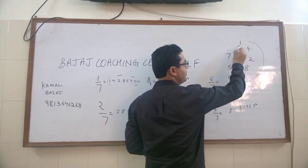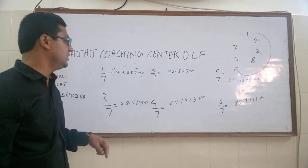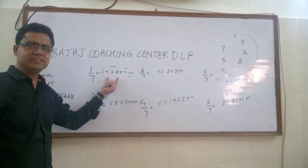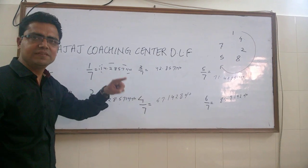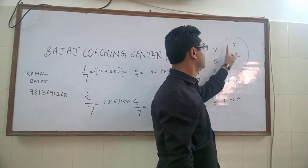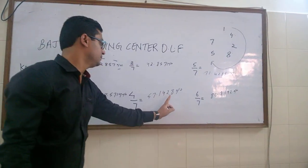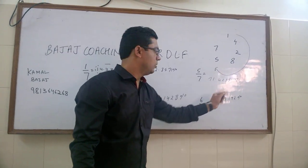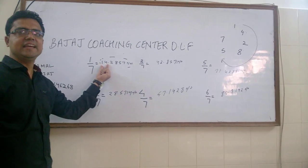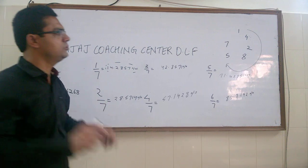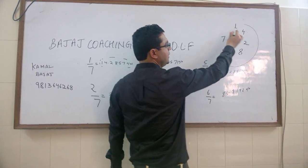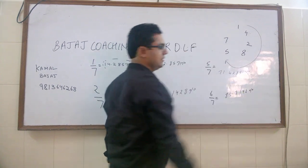If you follow this pattern, five by seven will be 71.4285 percent, and six by seven will be 85.7142 percent.